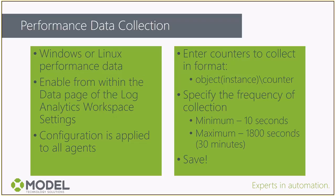We have the ability to specify how frequently data should be collected — from 10 seconds up to a maximum of 30 minutes. This is the interval at which data is collected. So if we set it for 10 seconds, we're getting a new record of what that counter was like every 10 seconds. That gives us a lot more insight into server performance, but it also means we're pulling in a lot more data to Azure. If you're using the OMS licensing model with unlimited data, collect it all. But if you're on a pay-per-usage model, you'll want to find the right balance between how much data you collect and the level of insight you want.